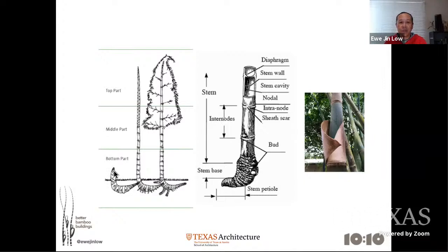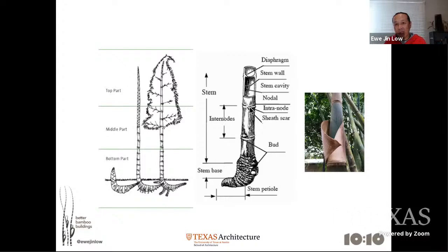You can see the difference between a younger shoot shooting up and a more mature bamboo culm. What you need to know is that the parts above the ground are the internode and the node. Just within the node inside is what you call a diaphragm. And at the bottom, the root is called the rhizome.